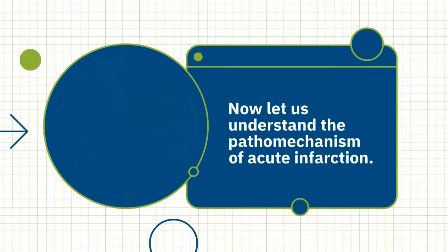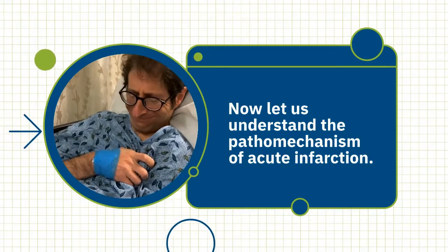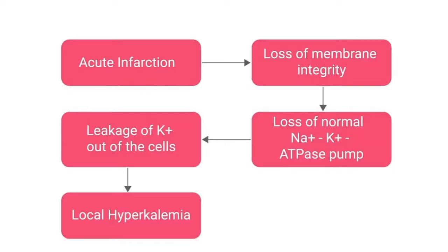Now, let us understand the pathophysiology of acute infarction. Acute infarction is caused due to complete cessation of blood flow and oxygen supply to the myocardium, resulting in loss of membrane integrity and normal sodium-potassium ATPase pump function, which results in leakage of potassium out of the cells and causes local hyperkalemia.